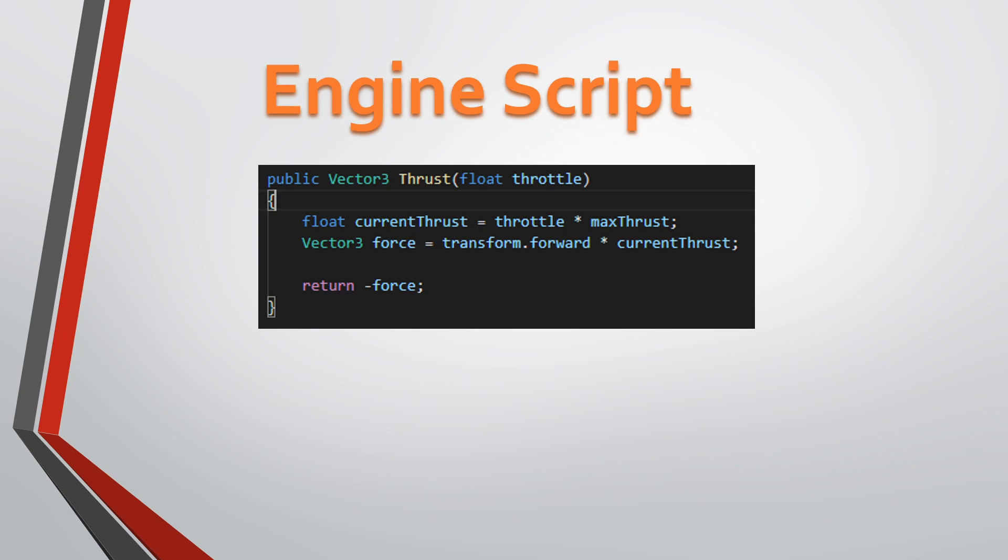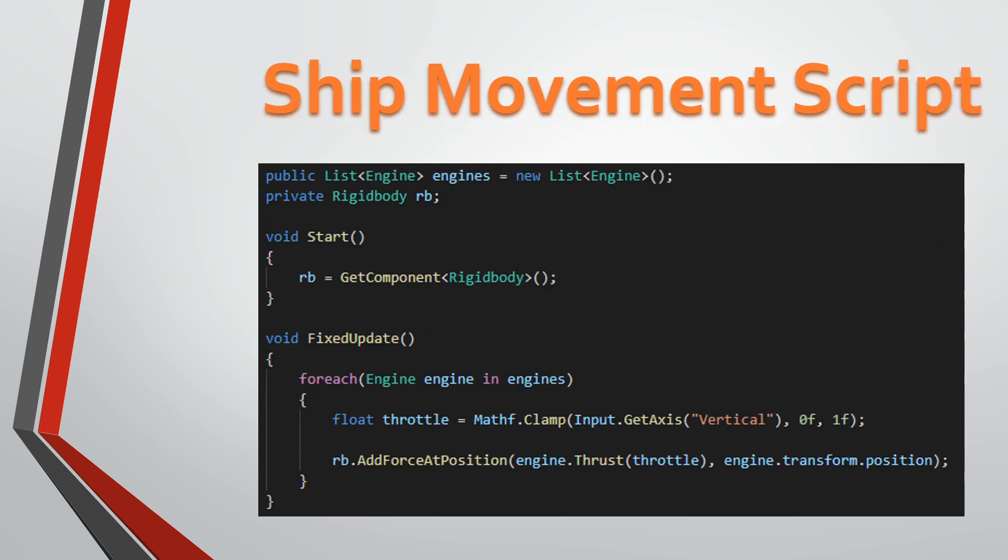We're going to return a negative thrust. The way I've done this is — when you think about a rocket, you see the flames shooting out the back, but the force is actually going to push it in the opposite direction of the flames. So we'll jump into the Unity section in just a minute.